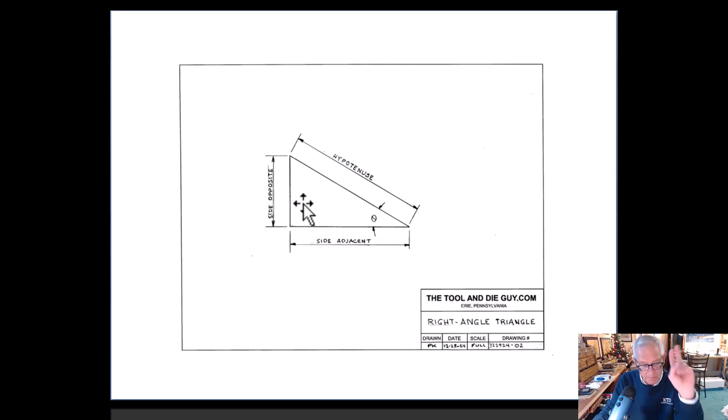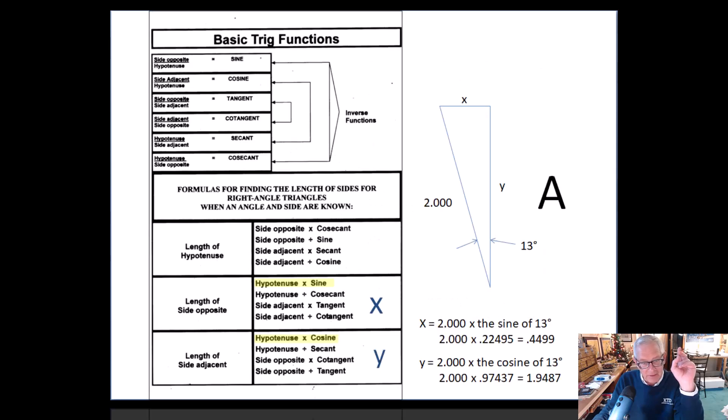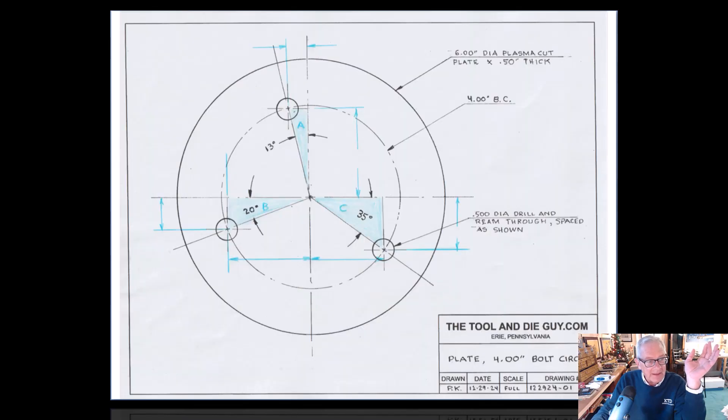Back down to here we go. In this case, let's solve for triangle A. Let's make this clear which one that is. A is this 13-degree triangle at the top right.